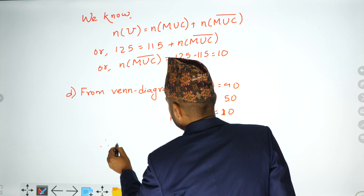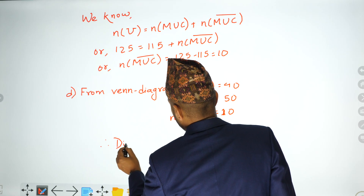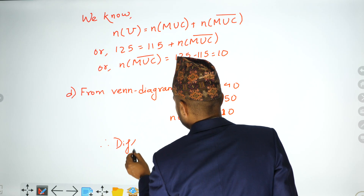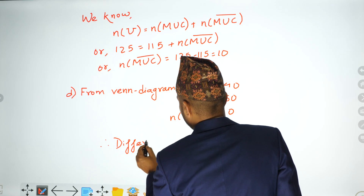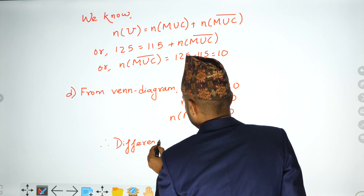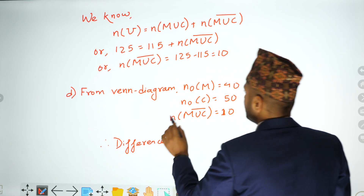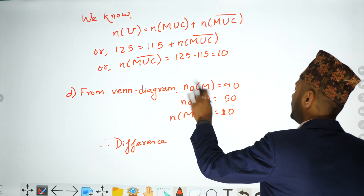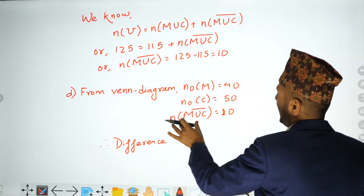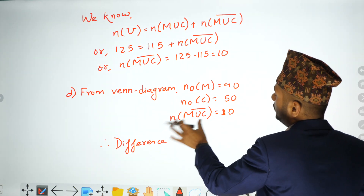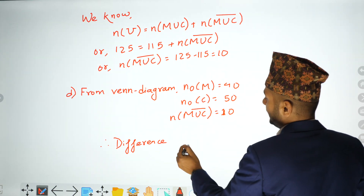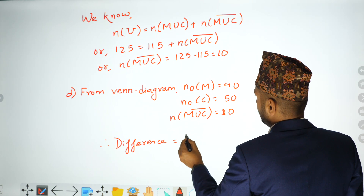Therefore the difference equals 80 — difference between students with only one device and those with no device.